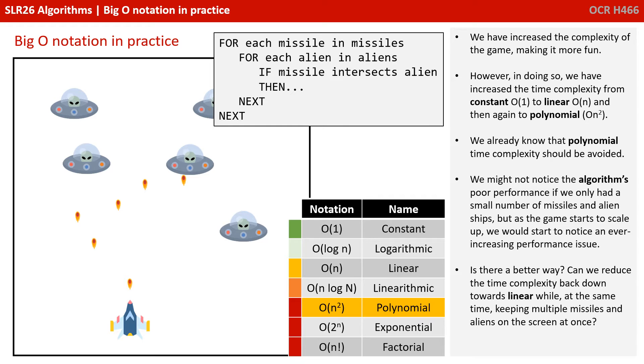We might not notice the algorithm's poor performance if we only had a small number of missiles and alien ships. But as the game starts to scale, we will start to notice an ever-increasing performance issue. So is there a better way? Can we reduce the time complexity back down towards linear, while at the same time, keeping the fun of having multiple missiles and aliens on the screen at once?